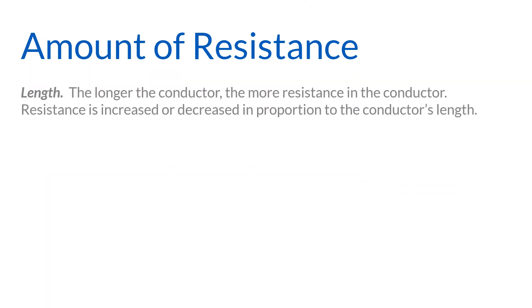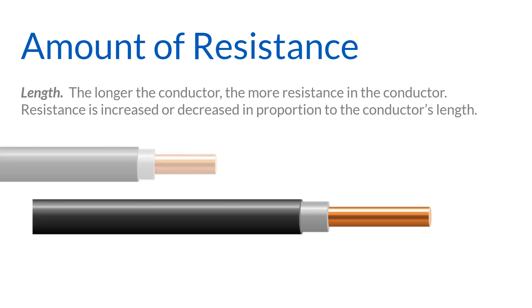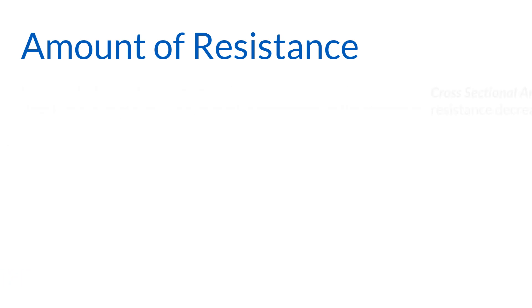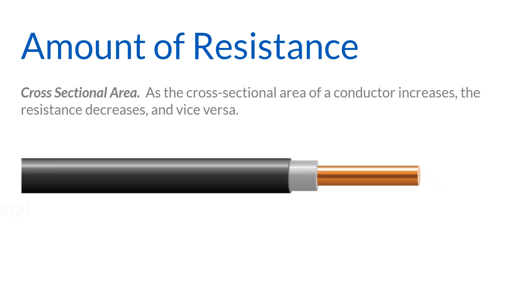Length: The longer the conductor, the more resistance in the conductor. Resistance is increased or decreased in proportion to the conductor's length. For example, a two-foot-long conductor would have twice the resistance of a one-foot-long conductor of the same type. Cross-sectional area: As the cross-sectional area of a conductor increases, the resistance decreases, and vice versa. For example, if the area of a conductor is doubled, the resistance is cut in half.